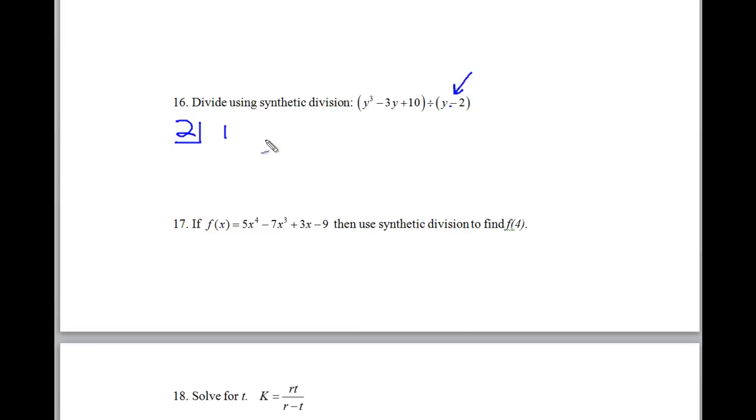And then from here, we're going to put our coefficients in. This is for our y cubed. There is no y squared here. Notice that there is no y squared, so we have to put a 0 as a placeholder there. Then negative 3, and then positive 10. So let's go and do our synthetic division here. We drop the 1.